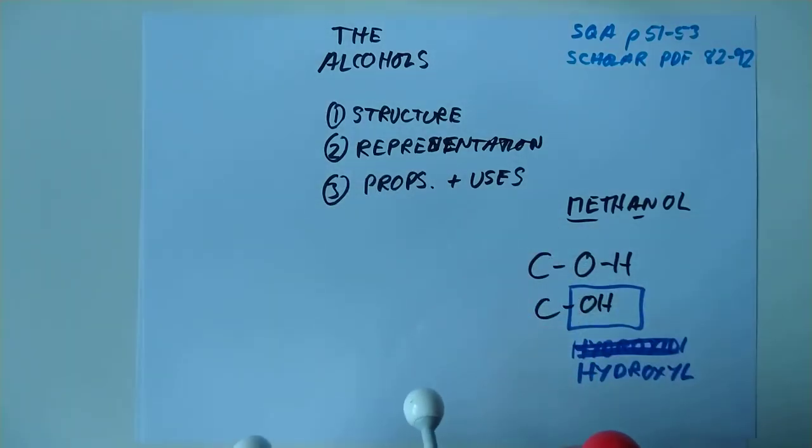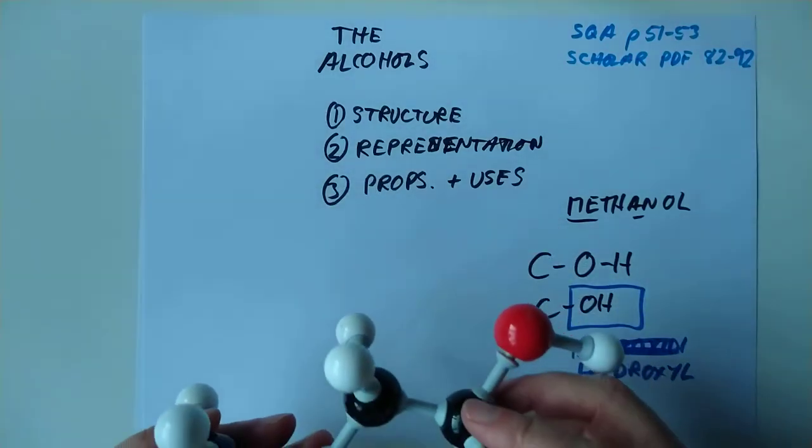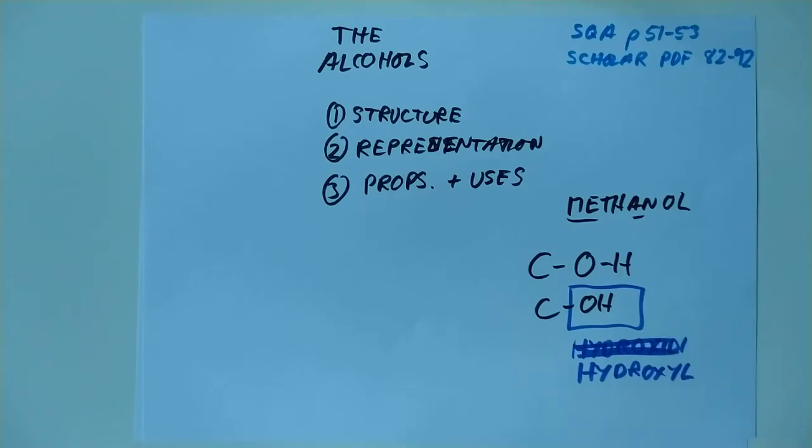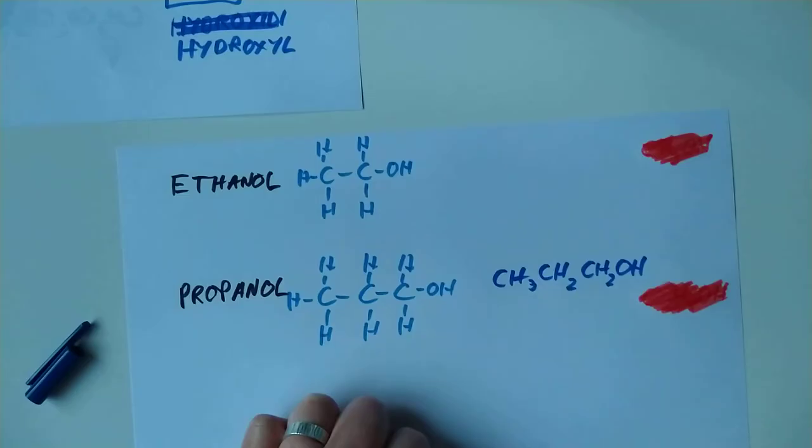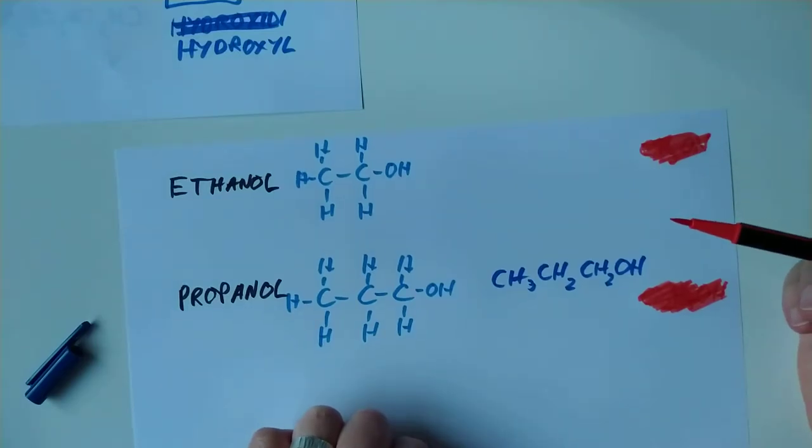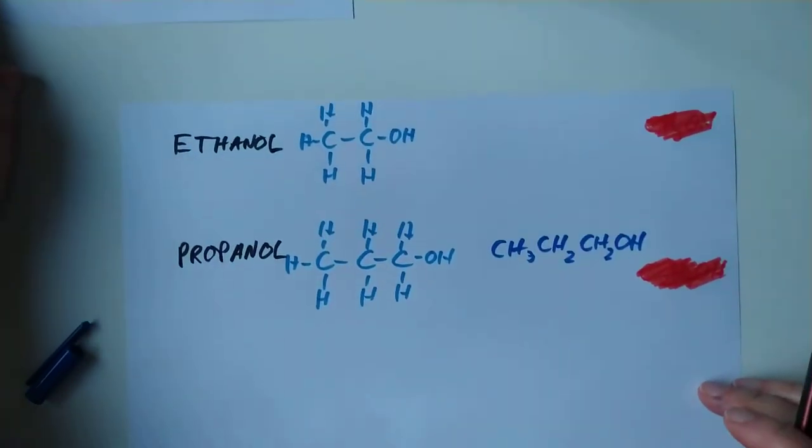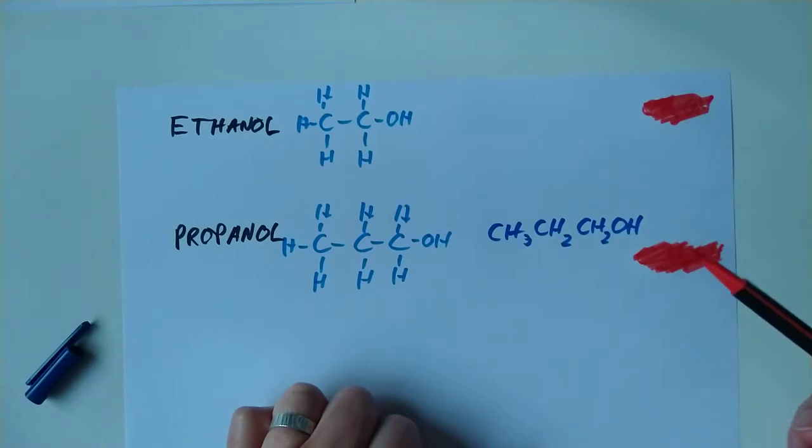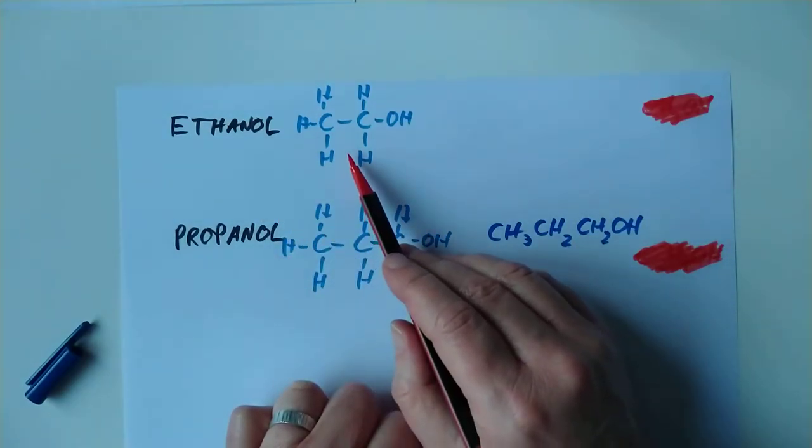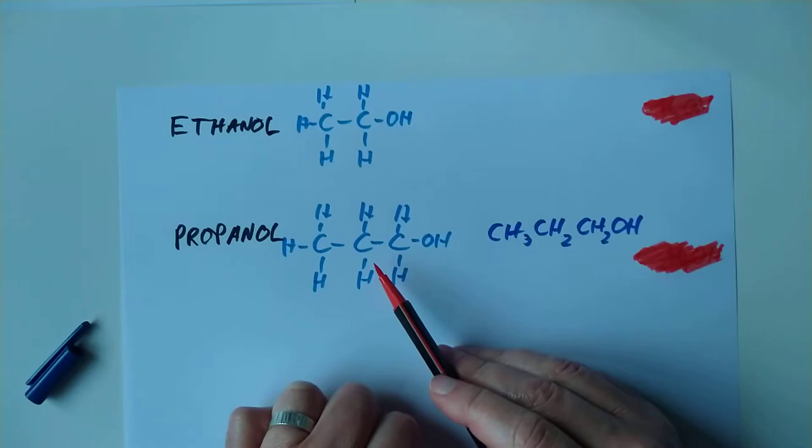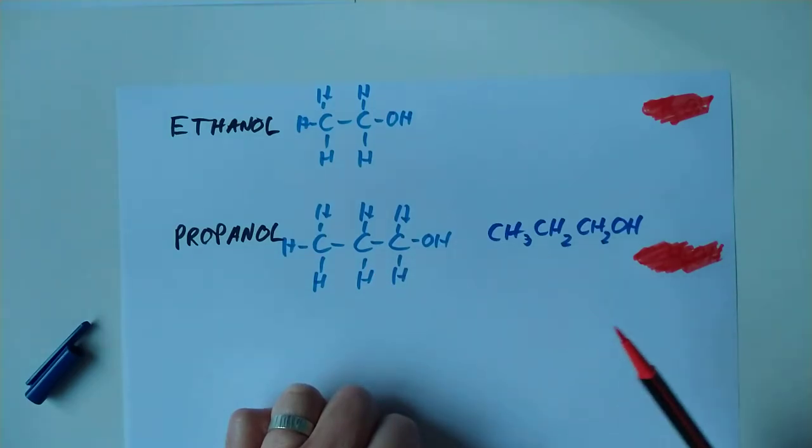So let's have a look at how you represent these molecules on paper. I apologize for the mess here. This is the second time I'm doing this video. We have got ethanol. This is what's called the full structural formula. Propanol's full structural formula. In darker blue here, I've got what's called the shortened structural formula.